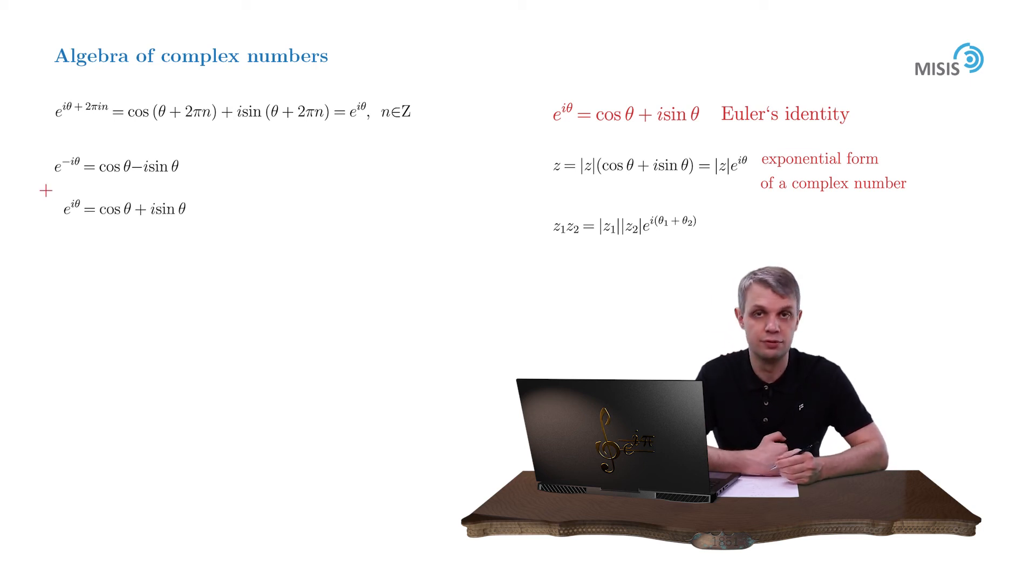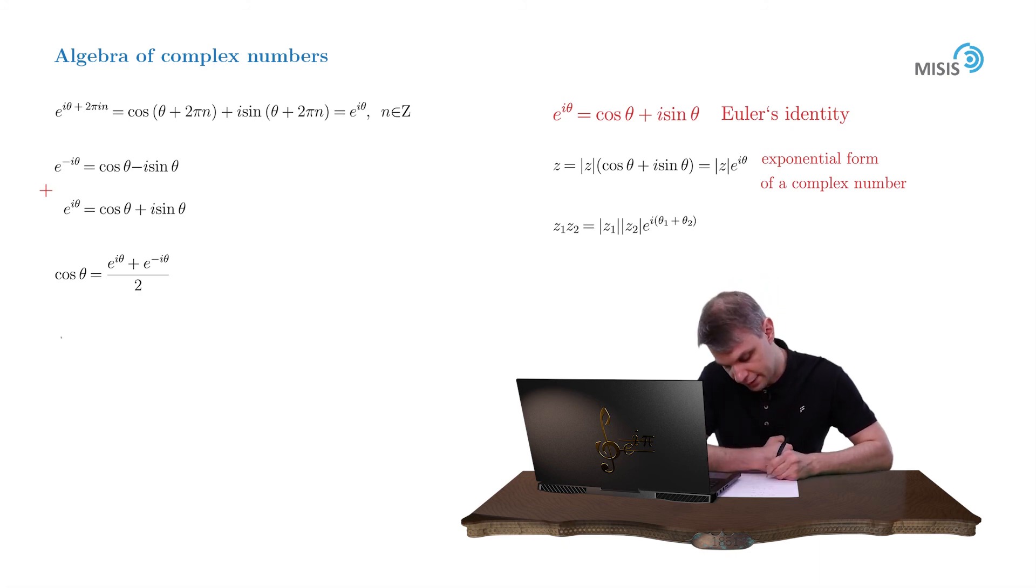And we immediately see that summing up Euler's identity for positive and negative angles, we obtain the expression for cosine theta, which is half of the sum of e to i theta and e to minus i theta. And subtracting them, we obtain the formula for sine function.